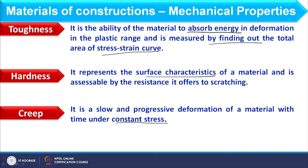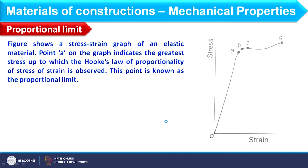Now we focus on properties used in designing, derivable through stress-strain relationships. The first is the proportional limit. On a stress-strain diagram (stress on y-axis, strain on x-axis), point A indicates the greatest stress up to which Hooke's law of proportionality of stress to strain is observed — essentially the extent of the linear region.